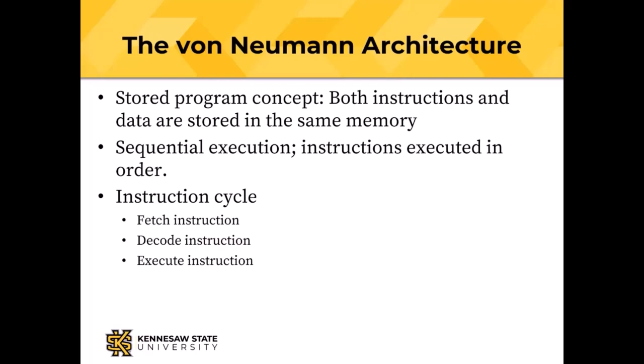The last step is execute — do what the instruction says. Von Neumann also described the use of binary numbers in computing. Engineers were already using binary circuits; I think I showed you a picture of a ring counter from ENIAC with a whole bunch of vacuum tubes, and that ring counter used 10 vacuum tubes to represent one decimal digit.